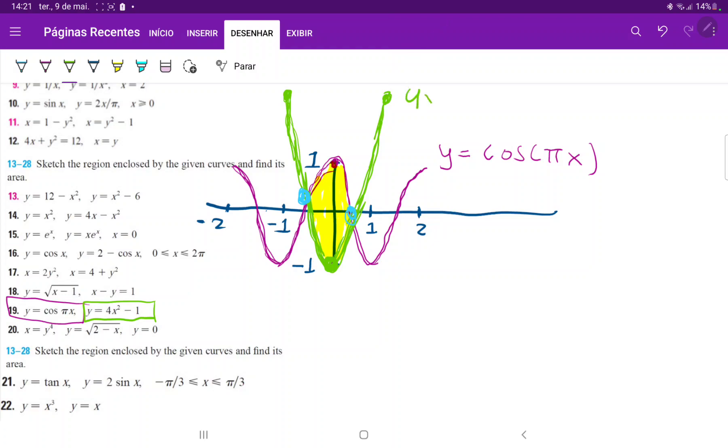We have 4x² minus 1 equals cosine of πx. This is kind of hard to analytically solve for. Maybe what we could do is consider that they probably do intersect at, graphically speaking, a half and negative one half. Even if you don't draw it perfectly, looking at it can give you intuition on which points you should test.